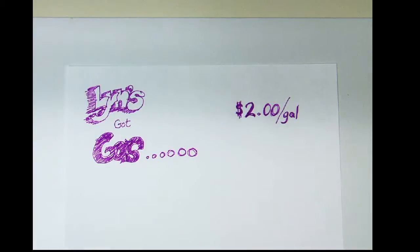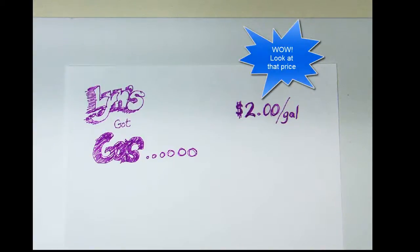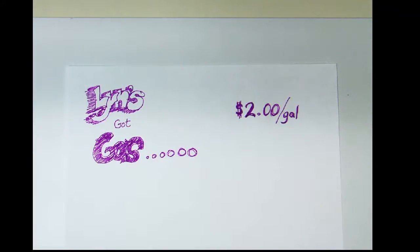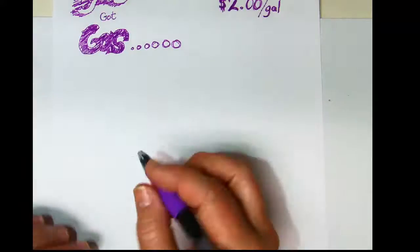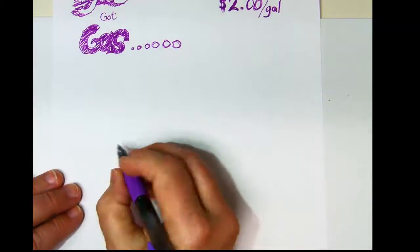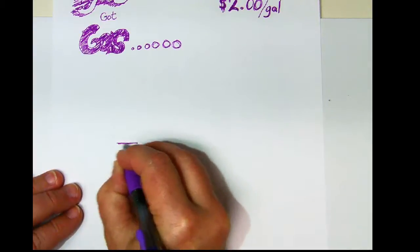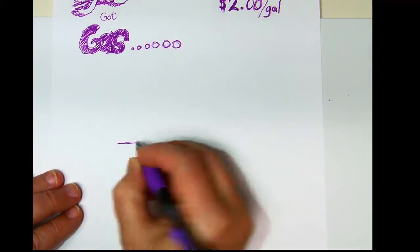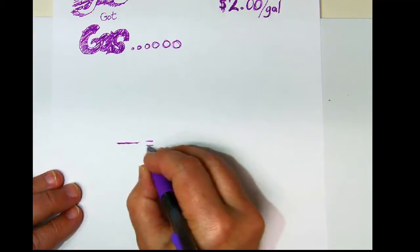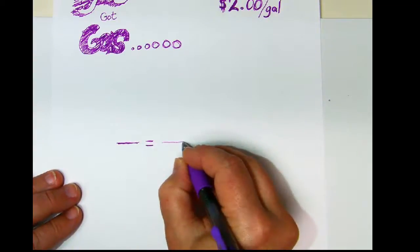Hi guys, just want to go over some drug dosage basics with you to give you an idea of how you can use something that's common day to work out your drug dosage problems. So let's say we go to the gas station and we find that the price of gas is two dollars per gallon. Because we know two things about this, it'll be easy for us to set up a ratio and proportion problem whether we show up with an empty gas can or we only have a limited amount of money in our wallet.